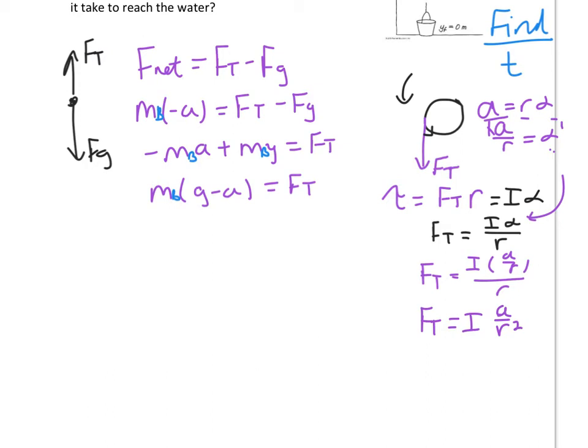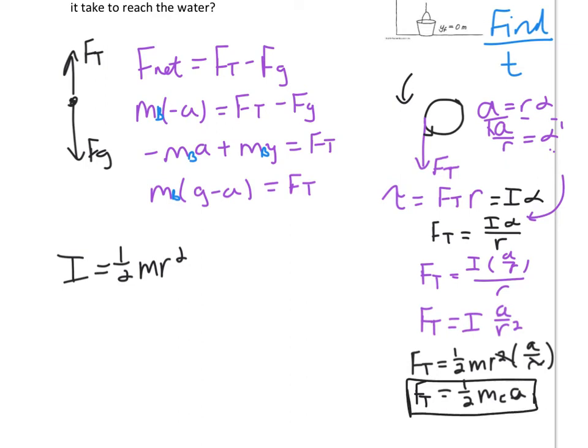Let's make another substitution. It's a cylinder. Moment of inertia for a cylinder equals one half m r squared. So substituting one half m r squared in for i, we get Ft equals one half m r squared times a over r squared. This is mass of the cylinder, so I'm going to put mc times a. So we know that Ft equals one half mc times a.